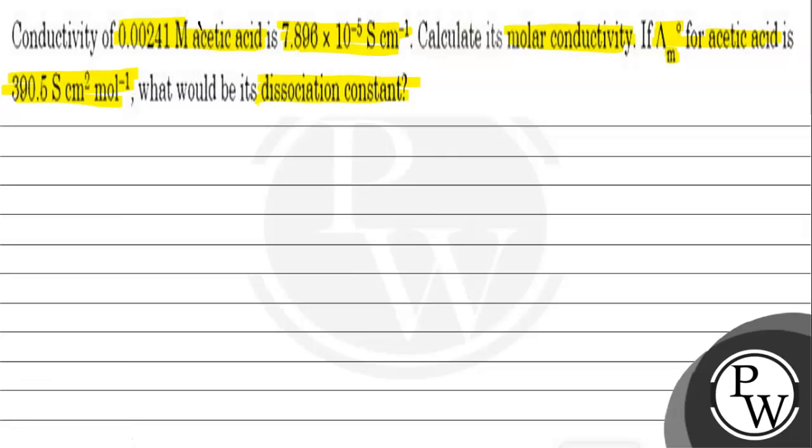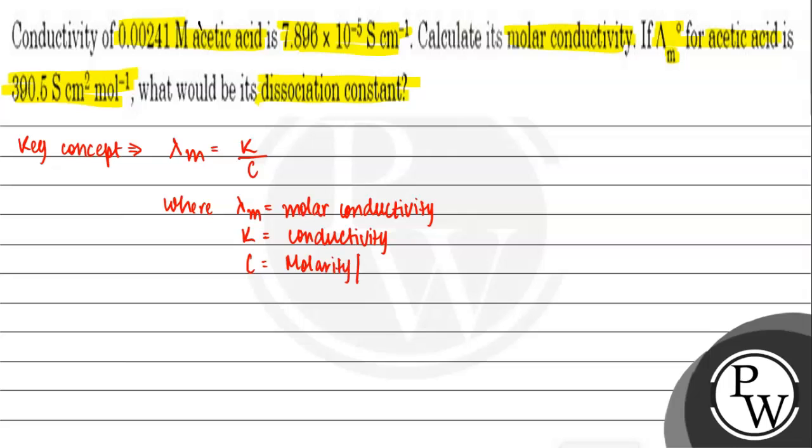So first we will write the formula as our key concept. I know that molar conductivity is equal to conductivity divided by concentration, where lambda m is molar conductivity, kappa is conductivity, and c is molarity or concentration.